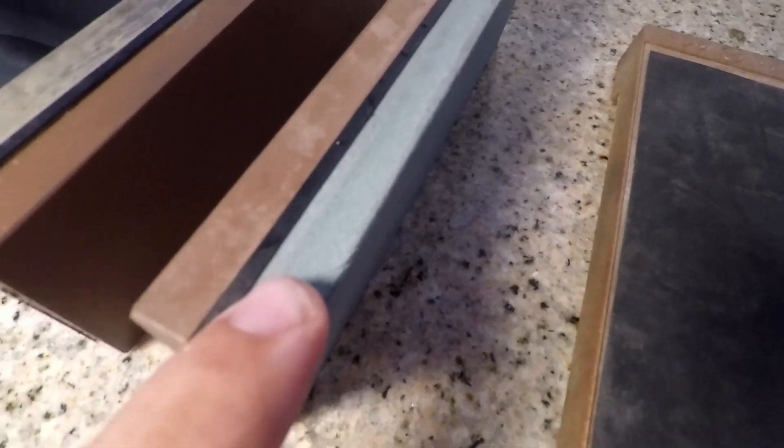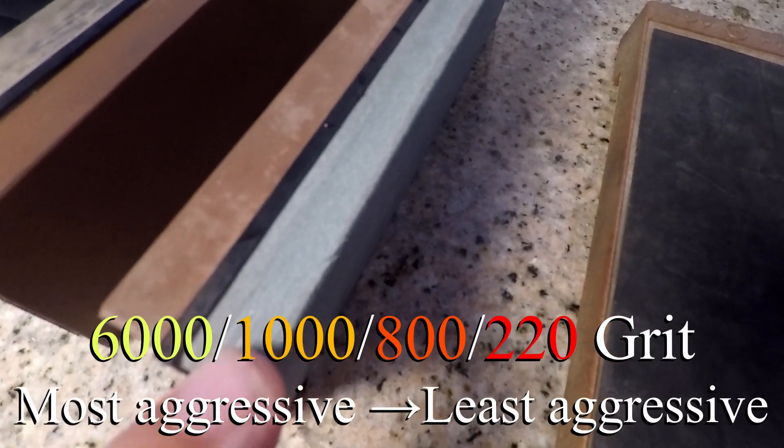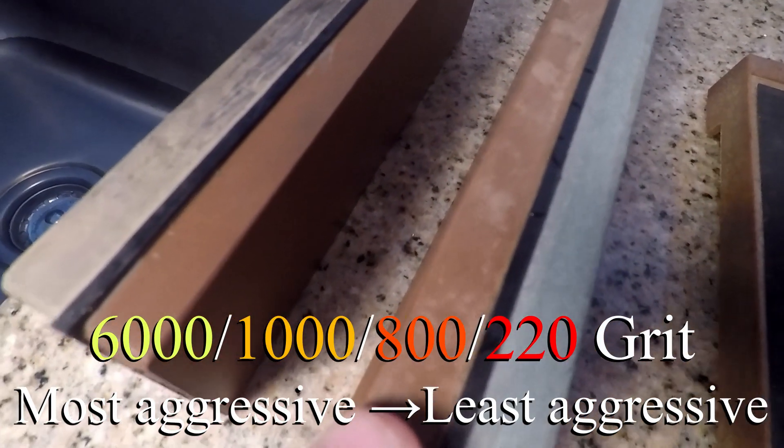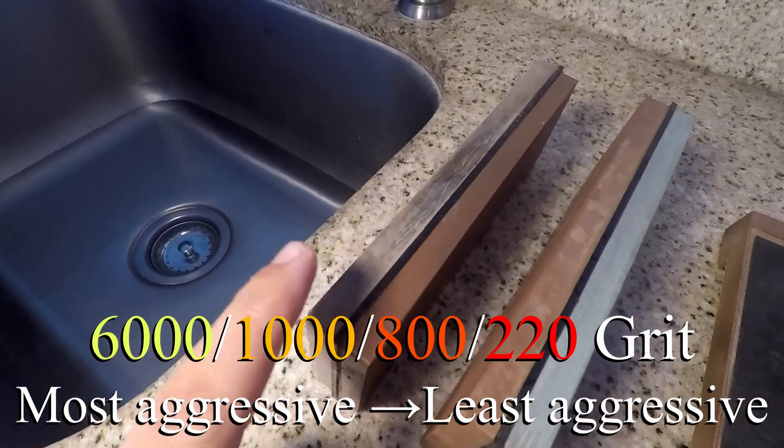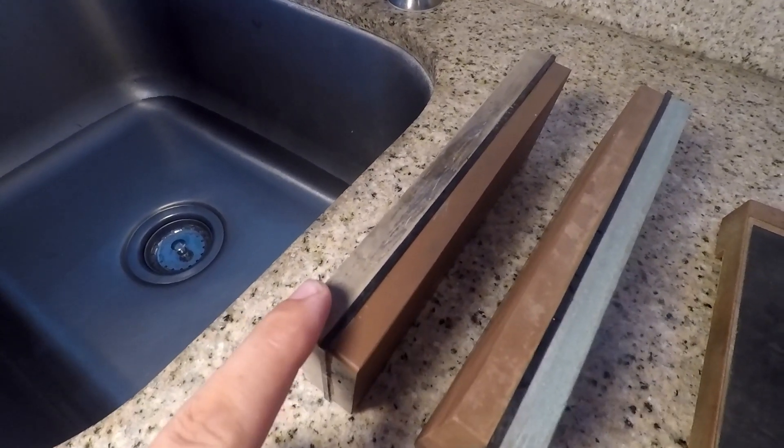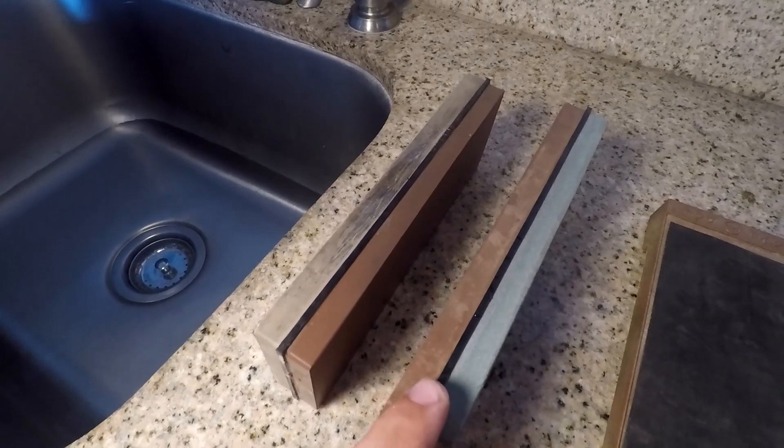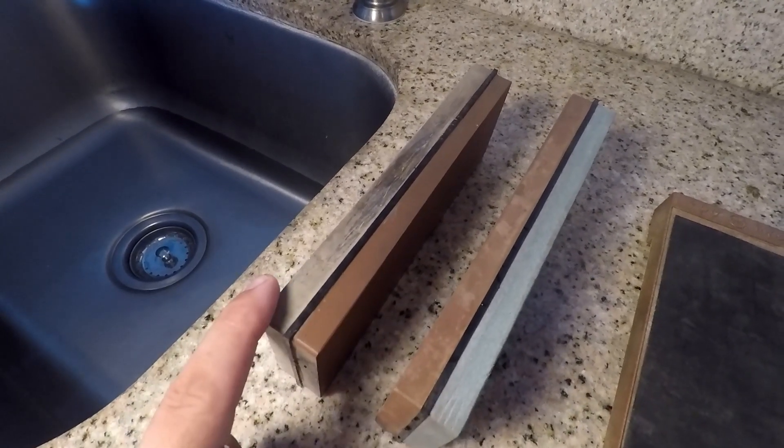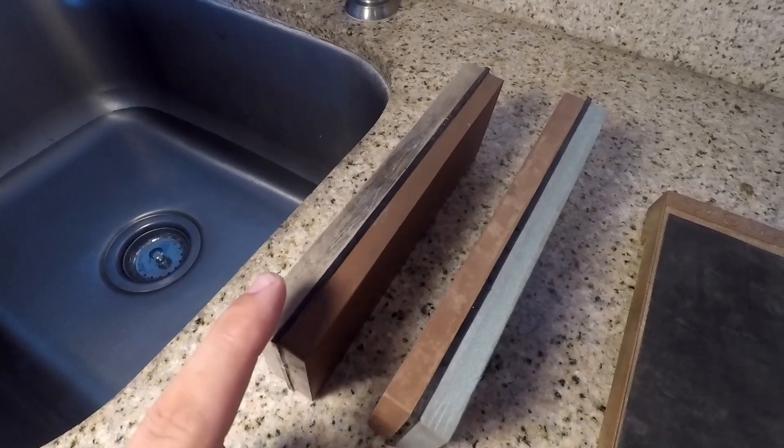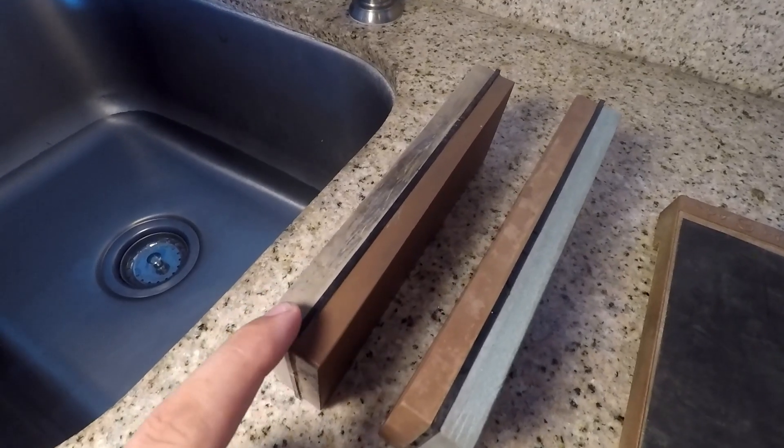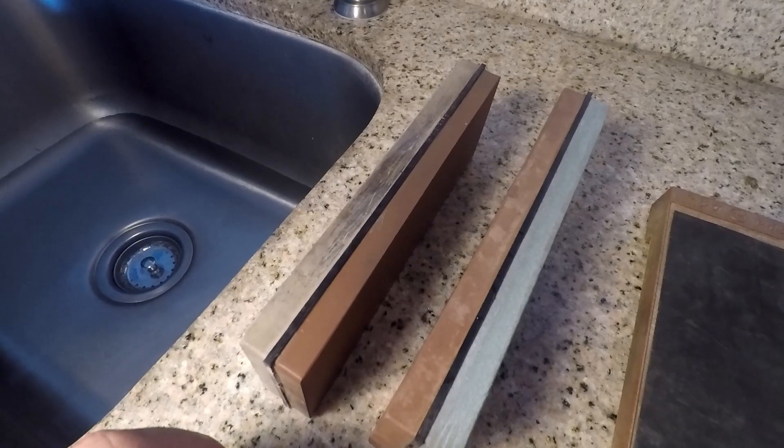So we have a 220 grit stone, an 800 grit stone, a 1000 grit stone, and then we're going to finish with a 6000 grit stone. And we're going to work our way from the more coarse to the polishing stone down here. So this one's actually just going to polish up the knife and give it that nice mirror edge that we have and just make sure it's really nice and sharp.